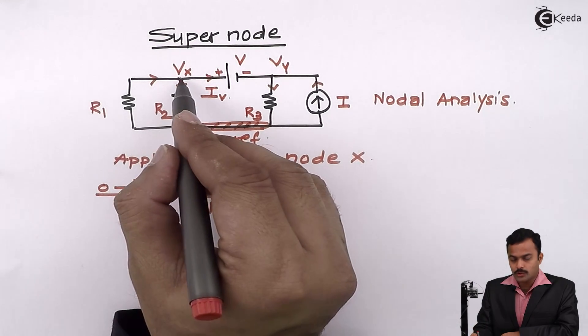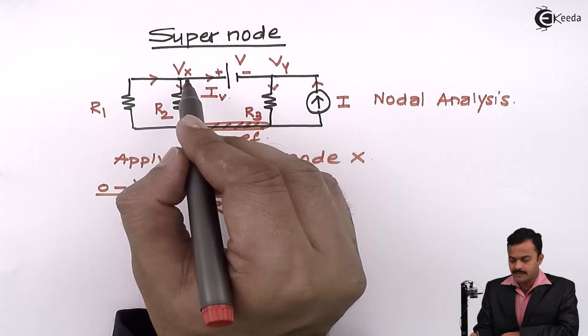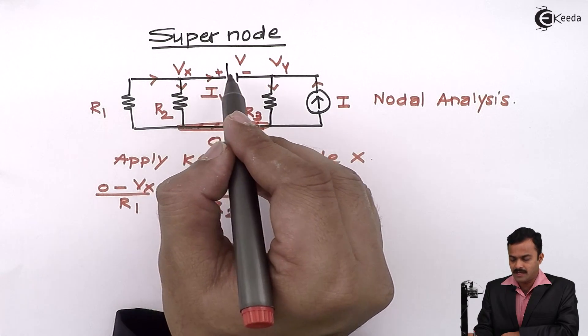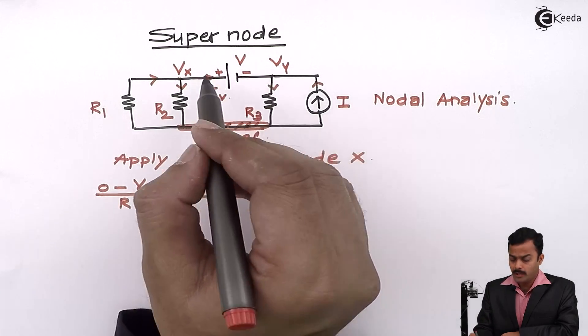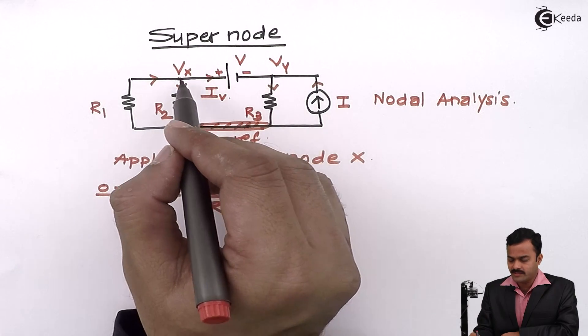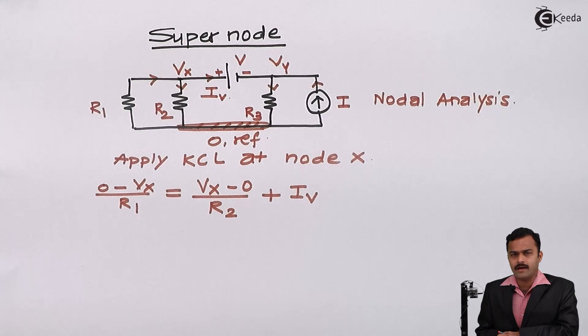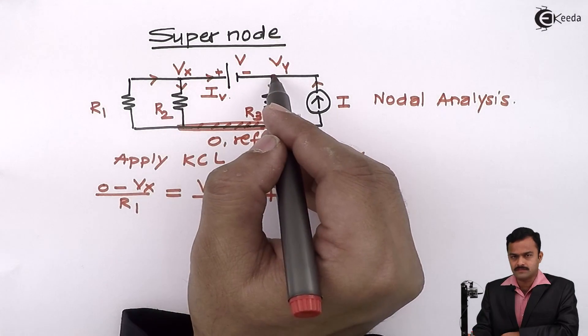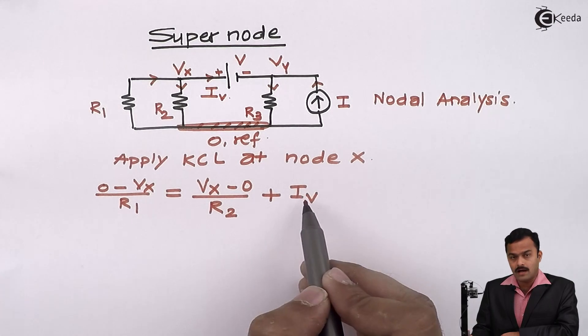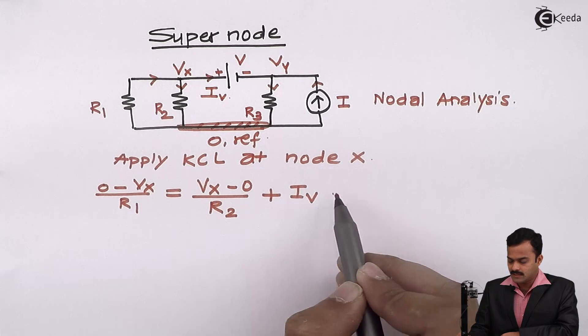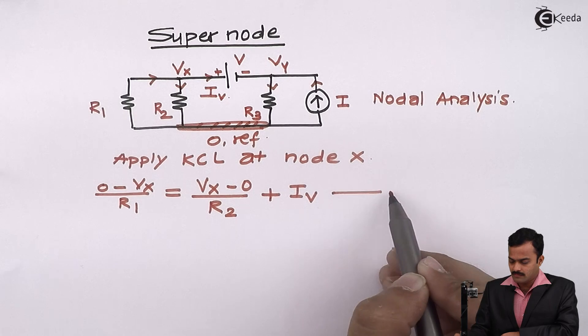So here I am not going to apply any equation like Vx minus Vy divided by R because R is not known or it is not given. So if I write that equation, it will give you infinite value. So there is a problem. So instead of writing an equation for this branch current, I will simply mention IV and I will consider this as equation number 1.